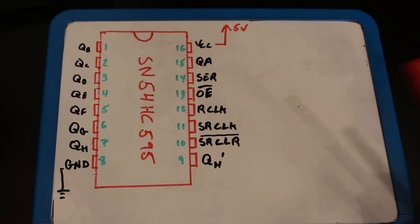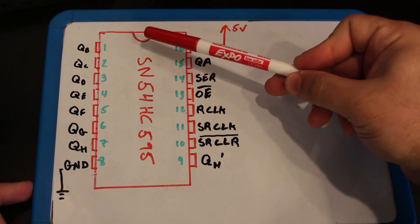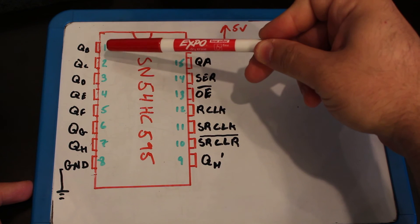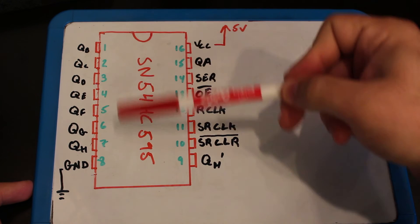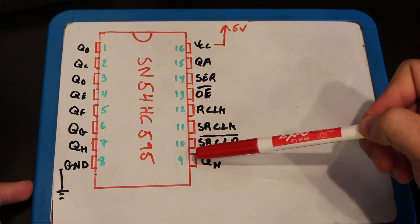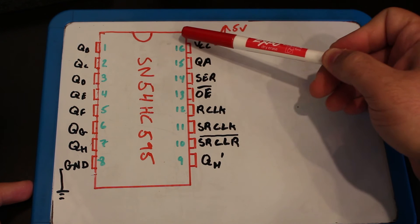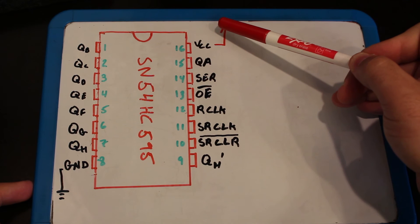We have the diagram over here of the shift register. Here's your notch, and your first pin will be to the left of it. Pin number 1 goes all the way down to pin 8 which is the ground. Then shifting over here which will be pin number 9 all the way up to 16 which will be your voltage input.